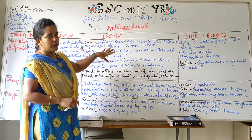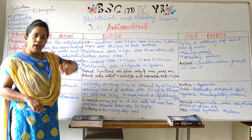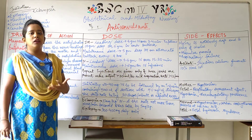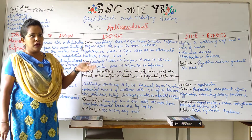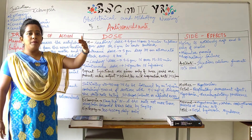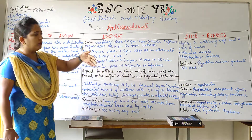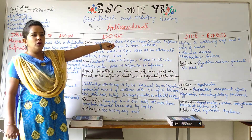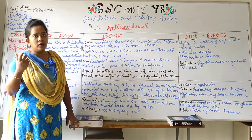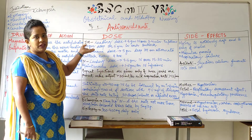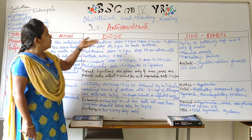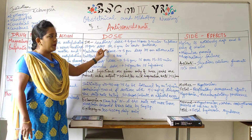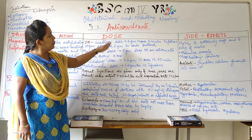Magnesium sulphate can be given either IM or IV. The starting dose is always IV. For the IM method, you administer 4 grams IV over 3–4 minutes as a very slow injection, then continue with 10 grams IM — given as 5 grams deep IM into each buttock — right buttock 5 grams, left buttock 5 grams — to reduce local concentration, minimising edema and inflammation.